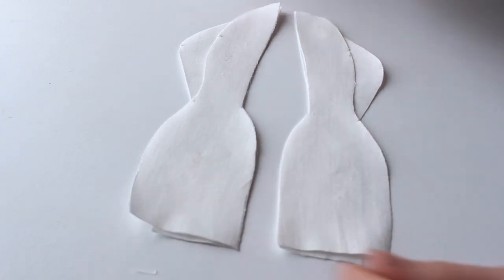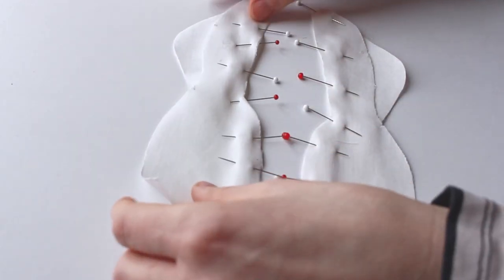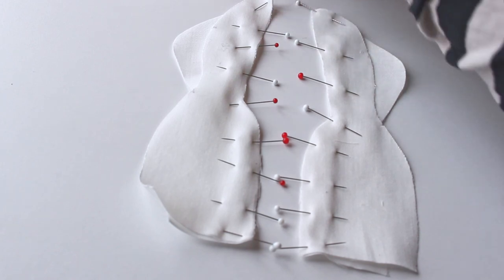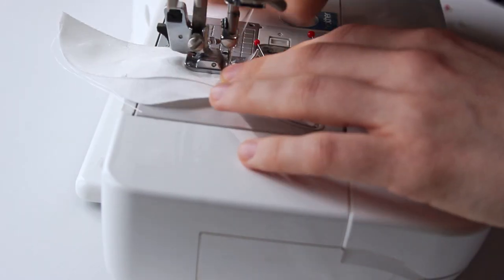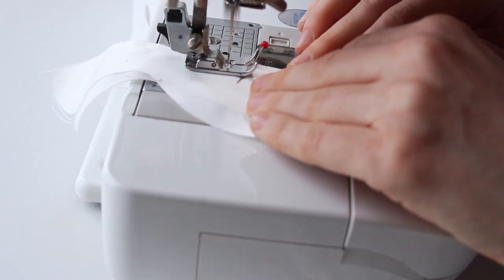Lay the side back pieces over them like this, so the right sides are together. Pin the side seams matching the waist notches. Make sure that you have two mirrored parts and stitch them together.